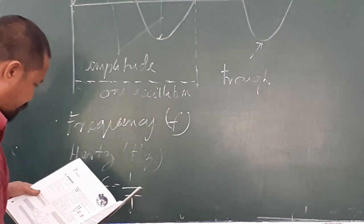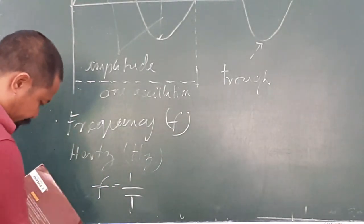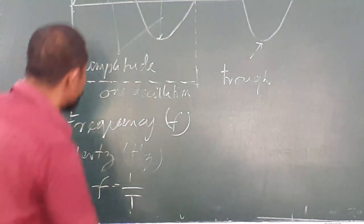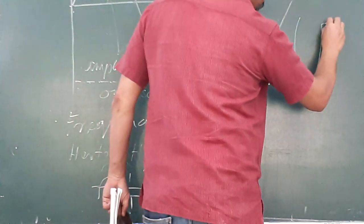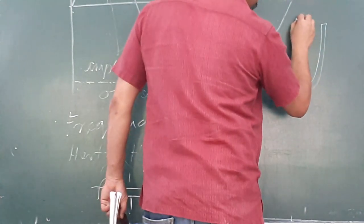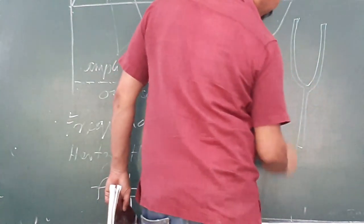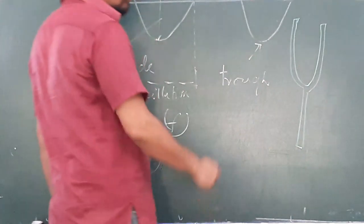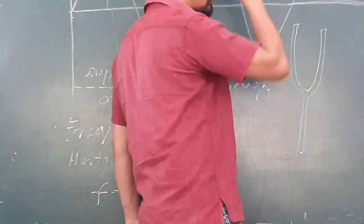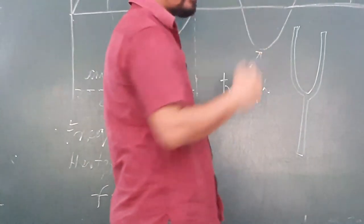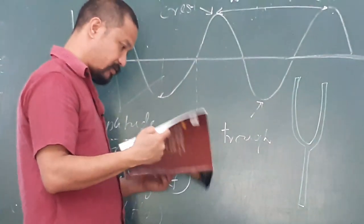If you go to the lab, you may have seen a tuning fork. It's this sort of a thing — you hold it here and when you strike it, this part vibrates and you bring it near the ear, you can hear a buzzing sound. That's called a tuning fork.